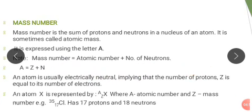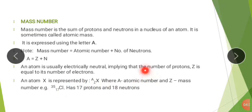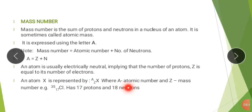Now let's look at an example. We have chlorine with a mass number of 35 and atomic number of 17 — meaning 17 protons. So, what will be the number of neutrons? To get the number of neutrons, I will compute 35 minus 17 according to this formula, and I will get 18 neutrons. Therefore, chlorine has 17 protons and 18 neutrons.